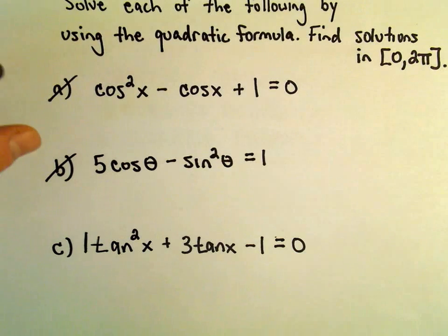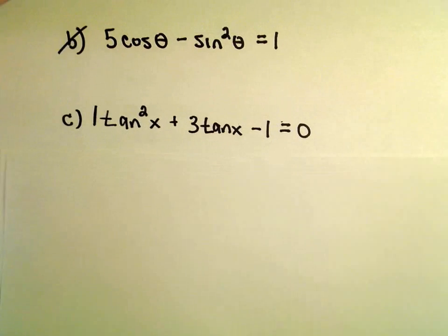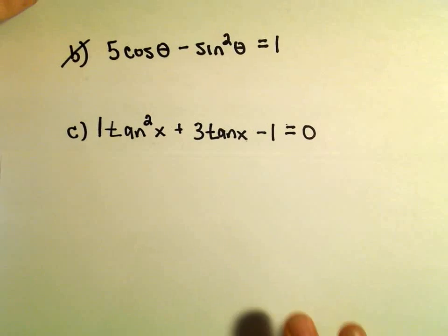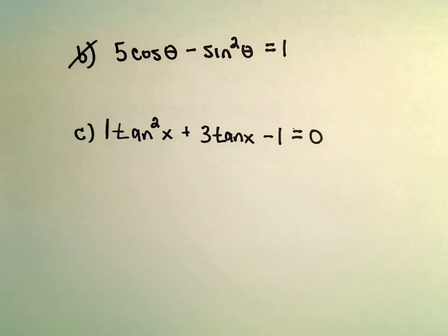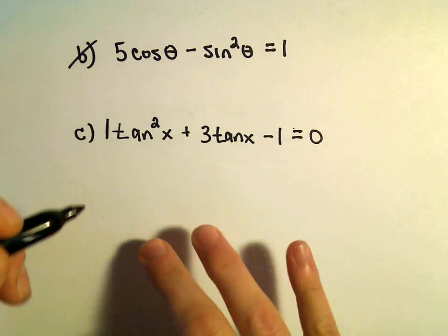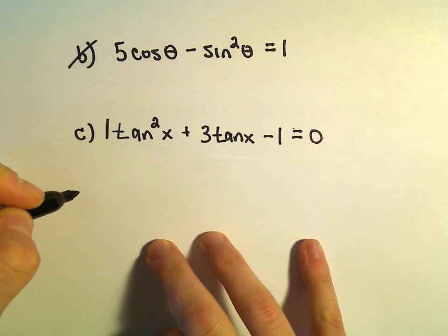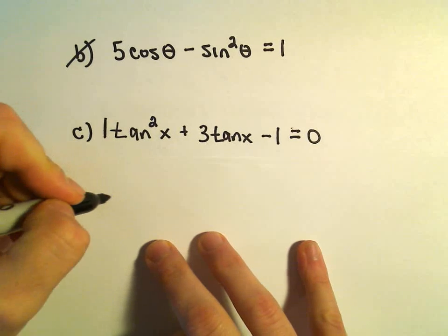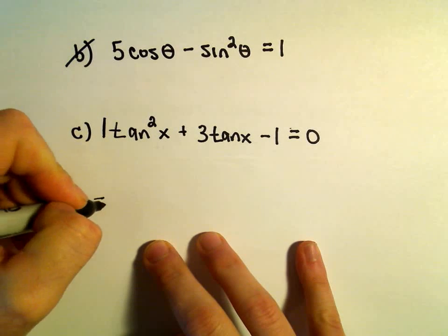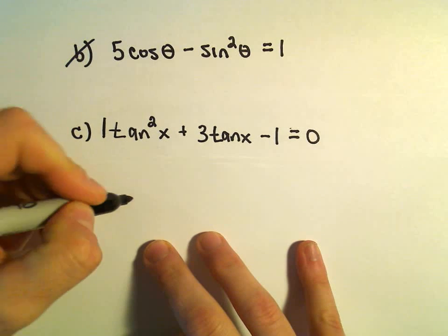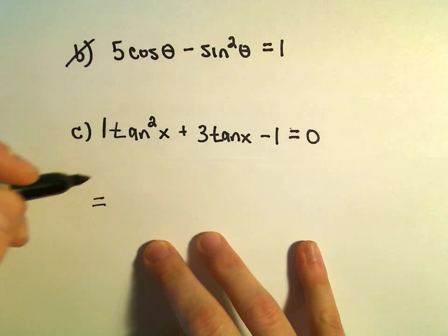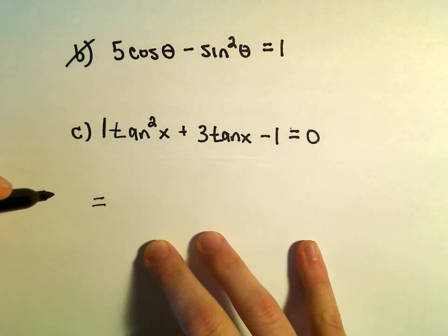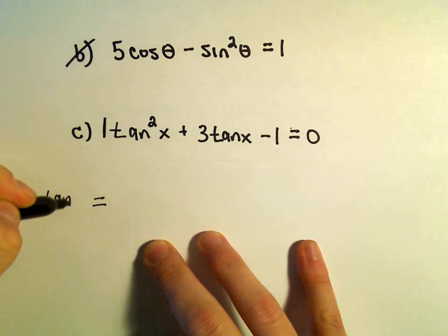You could try factoring this — that would be my first inclination. But you can check and make sure that it's not going to factor. Normally we have x equals negative b plus or minus all that stuff, but instead of just x, now we're going to use tangent x.